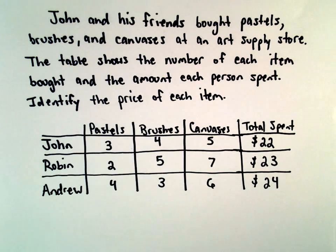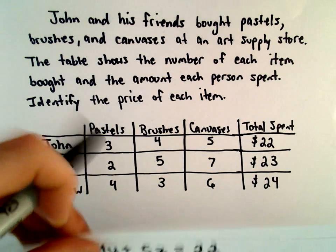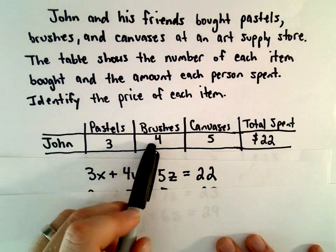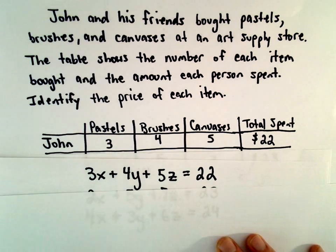What we're going to do is set up a system of equations that we'll solve. So from the first row of information in our table, we could create the equation 3X plus 4Y plus 5Z equals 22.